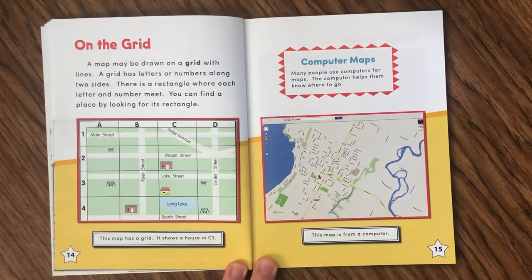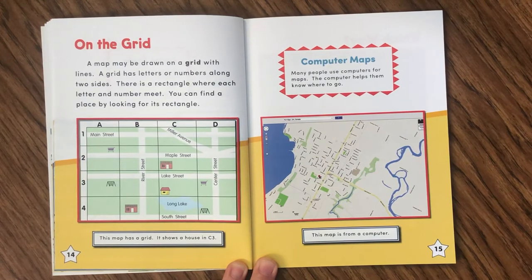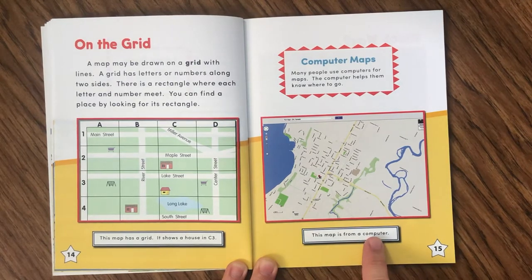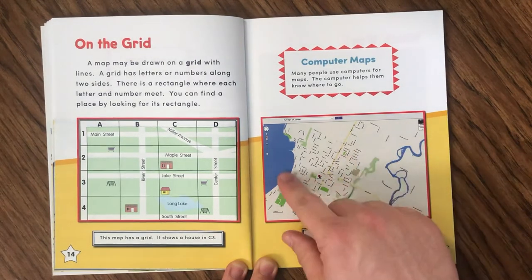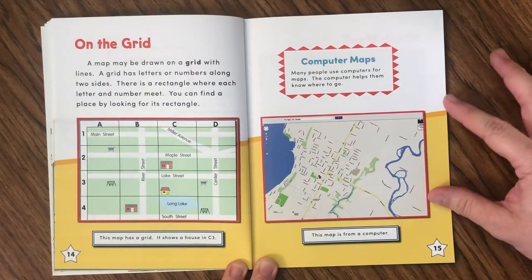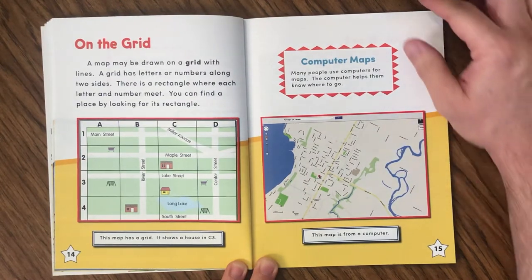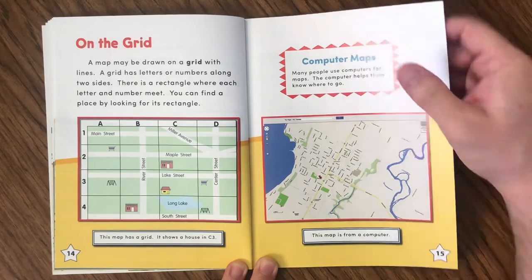Computer maps. Many people use computers for maps — the computer helps them know where to go. This map is from a computer, and this is kind of what the map looks like on my phone if I'm using navigation to get somewhere.